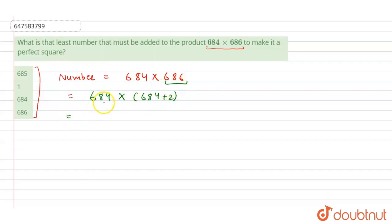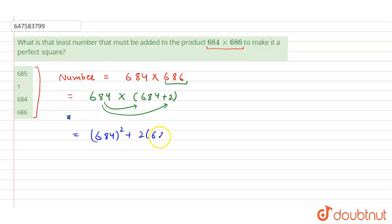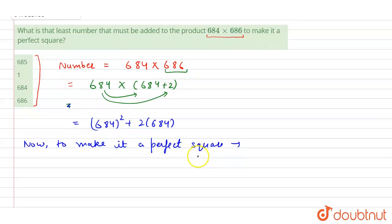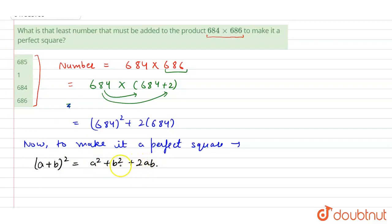Now we will multiply 684 by this, and by this we will get 684 squared plus 2 into 684. Now, to make it a perfect square, we will refer to the formula (a + b)² which equals a² + b² + 2ab. This is a very simple formula we all know.